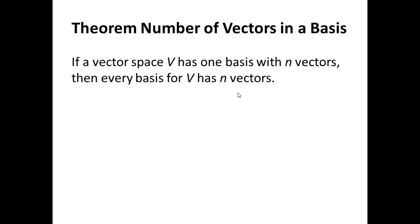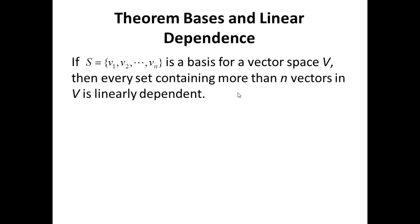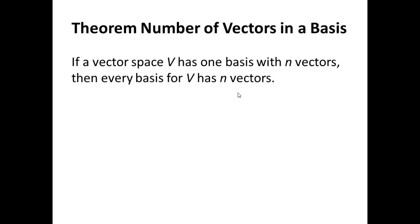Remember before we said if S defined by the vectors V1 to Vn is a basis, then every set containing more than N vectors is linearly dependent. Well, over here what we are saying is if I succeed to find a set S that is a basis for the vector space V, then every basis for V must have N vectors.